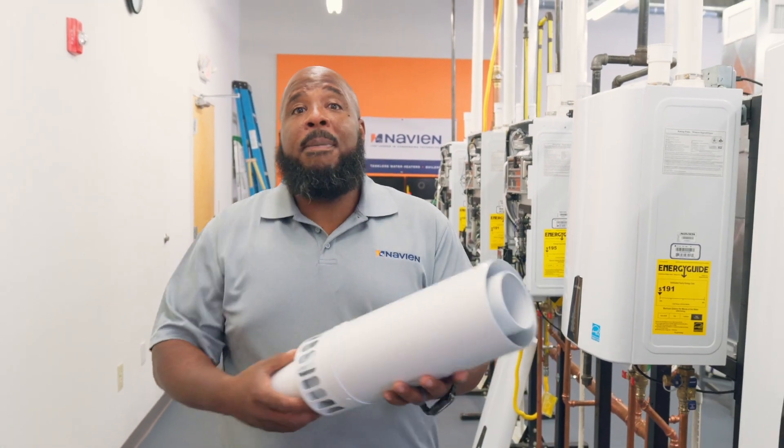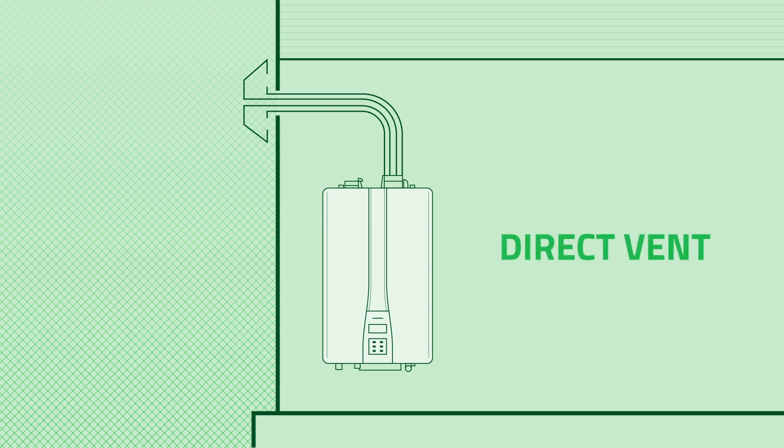The benefit of our concentric vent termination is that it only requires one penetration, whether we're going through the side of the home or whether we're going through the roof. One penetration through the side of the home.